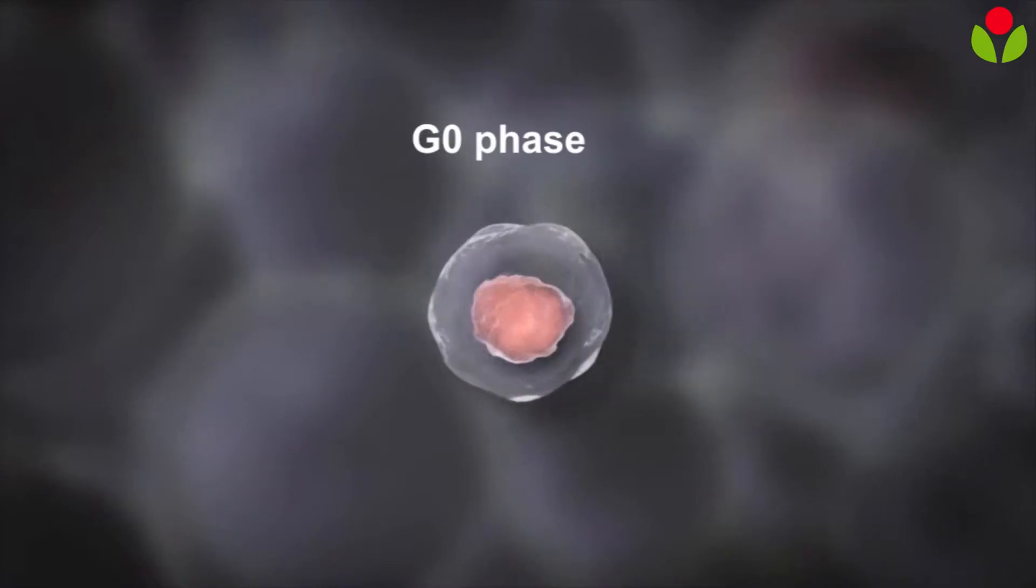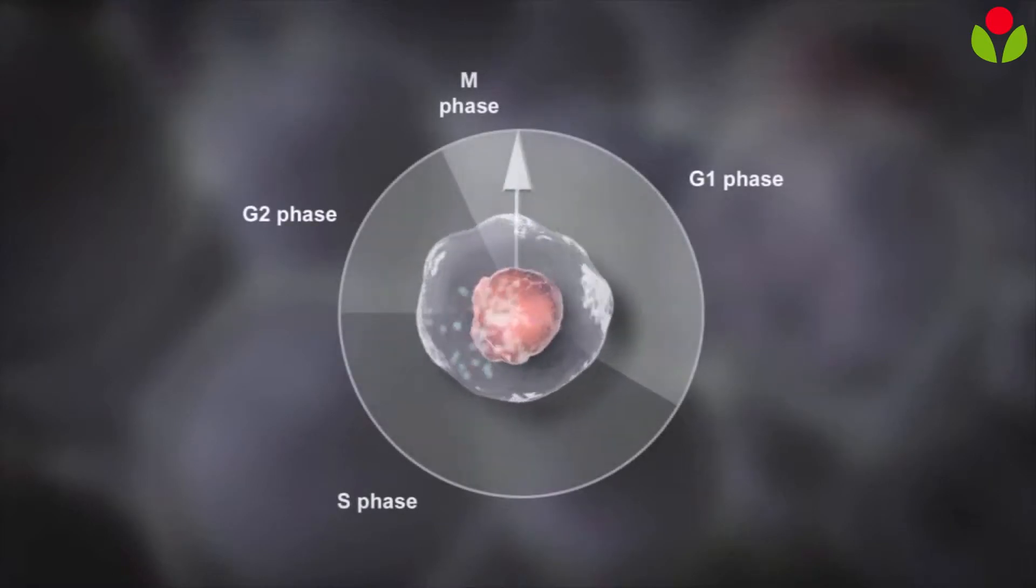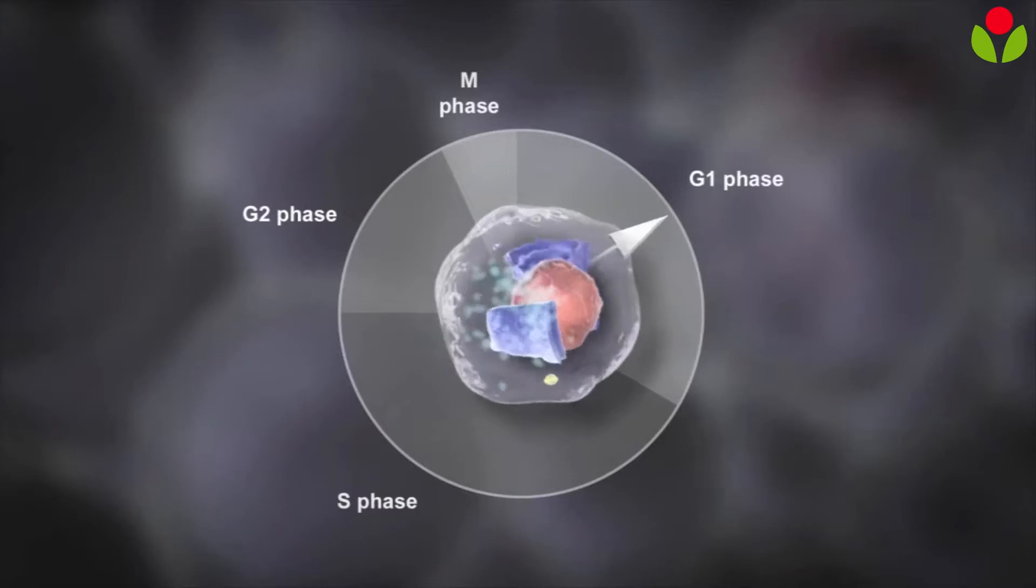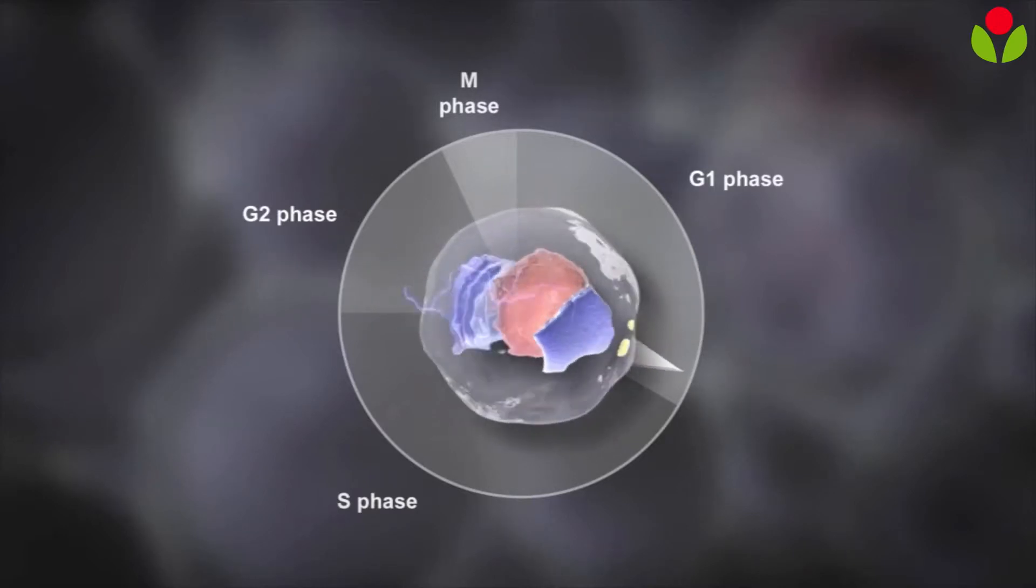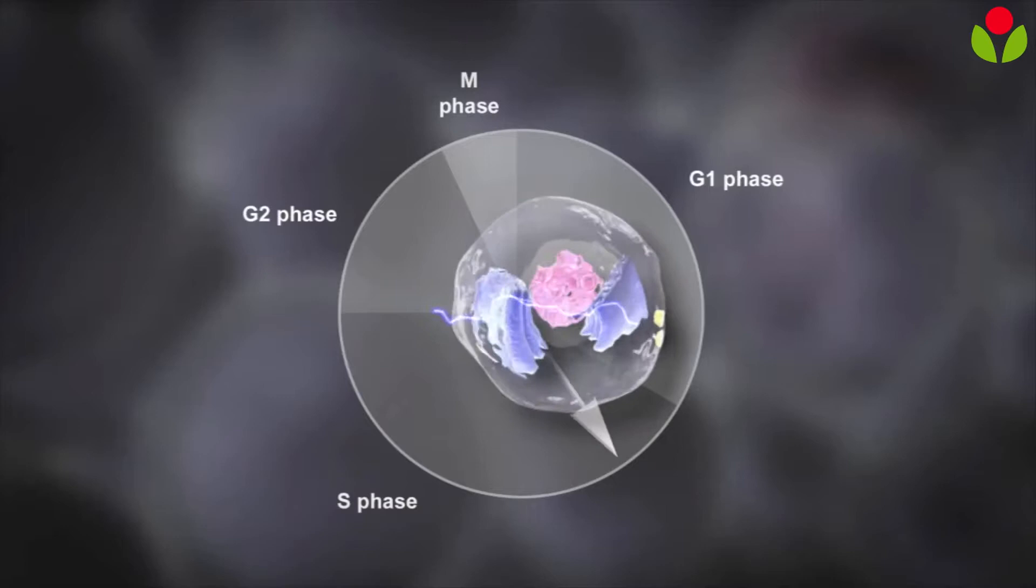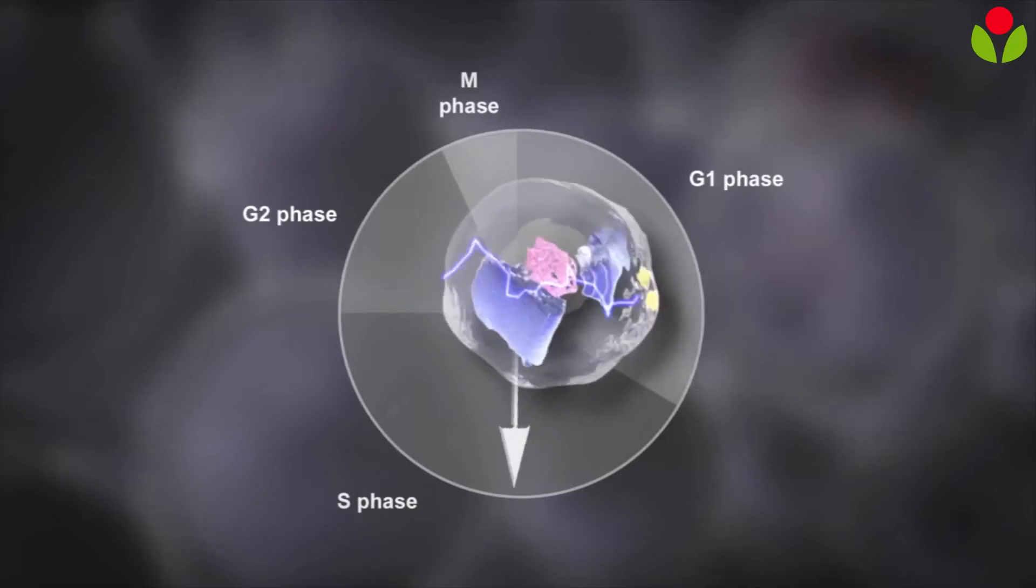The cell then grows larger in size and makes proteins. These are important for the next step. This phase is called G1. The cell creates two copies of its DNA in preparation for dividing. This is called the S phase.